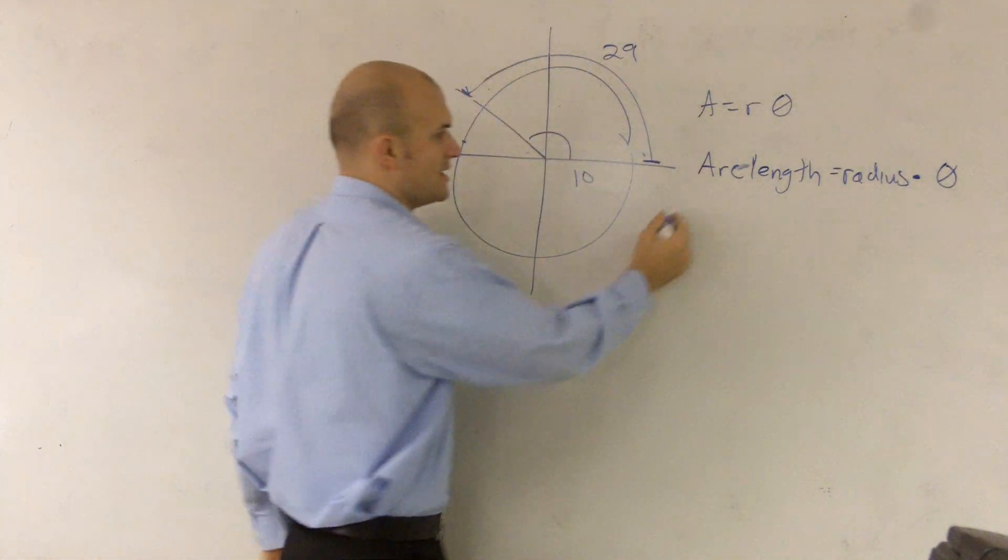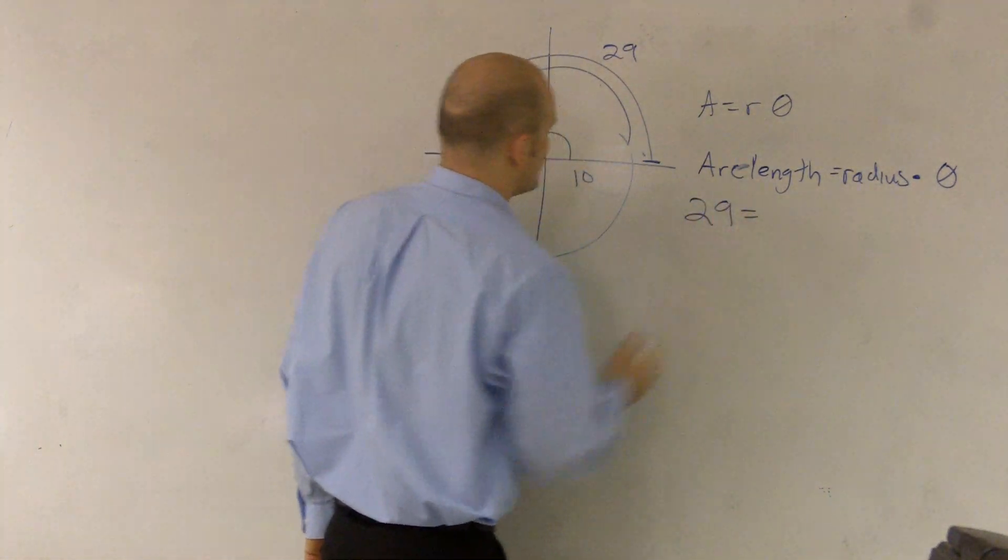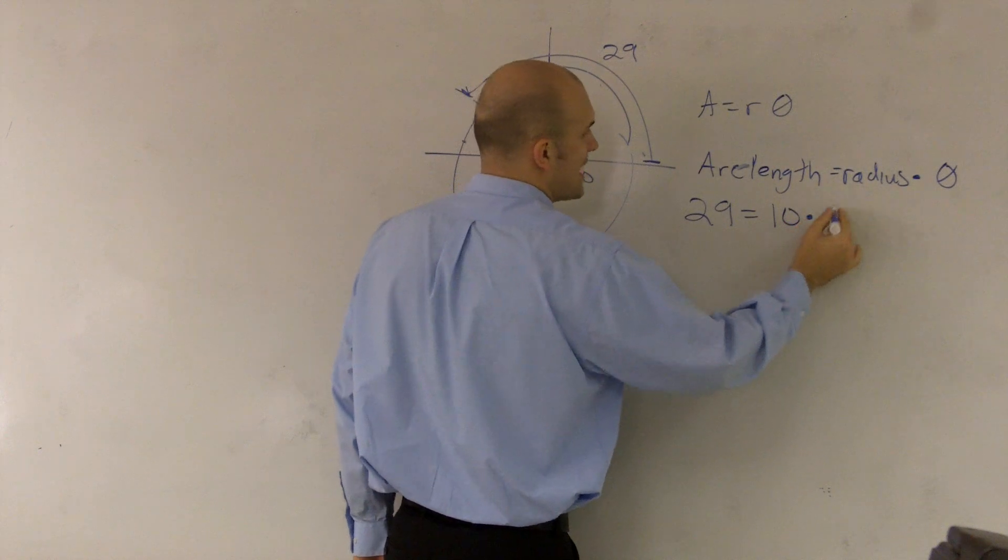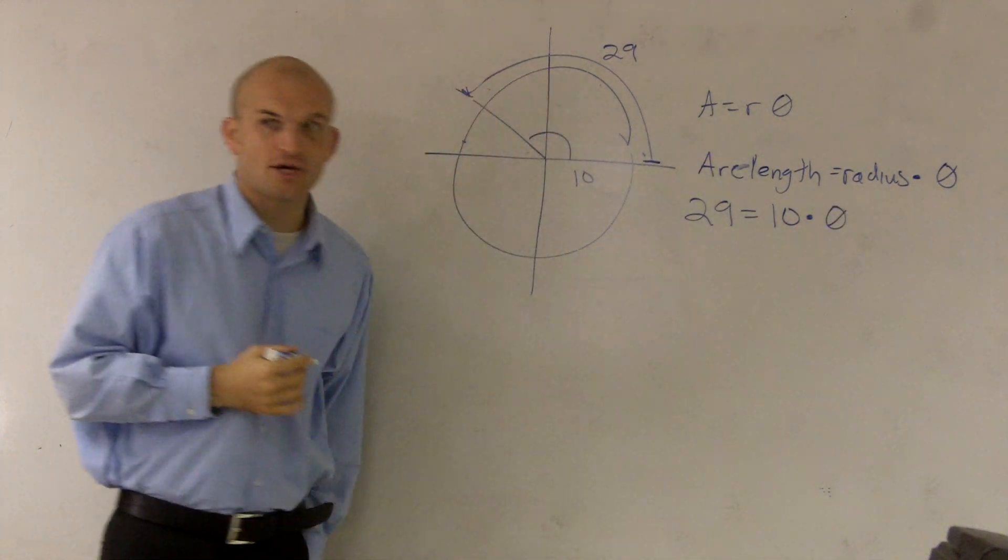So therefore, the arc length is 29, equals my radius, which is 10, times theta, which I do not know. I'm trying to solve.